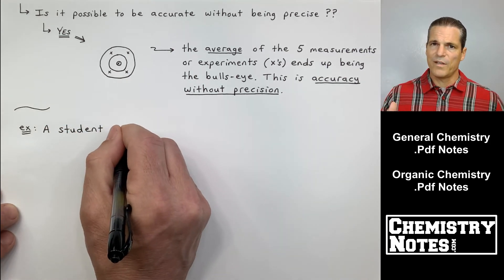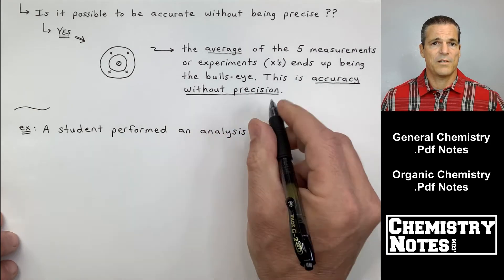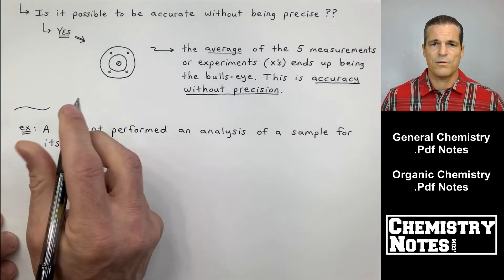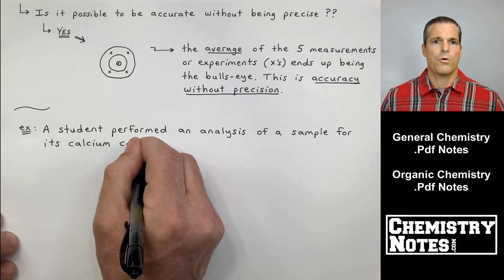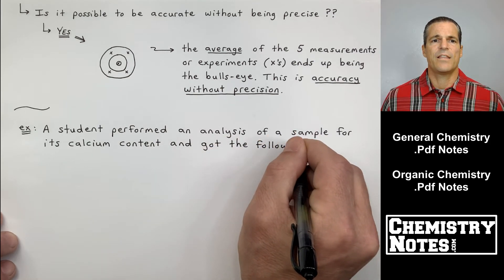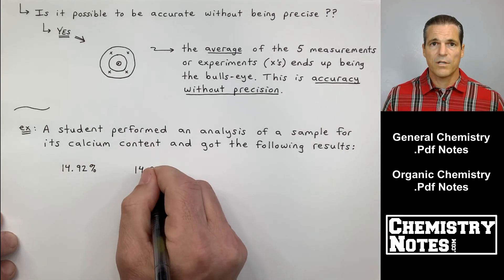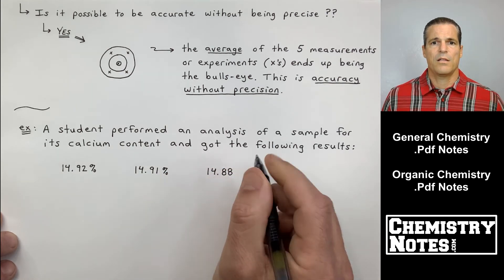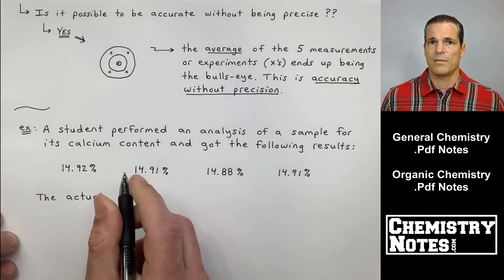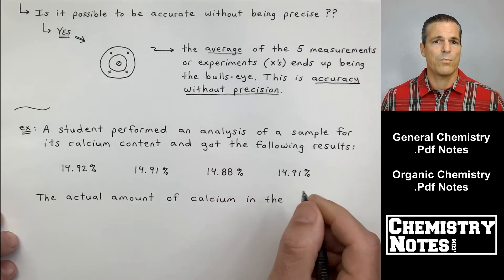All right, that little swervy line means I'm moving to an example. It says a student performed an analysis. So this student could be you, could be the student next to you, but it's a student in a lab performing an analysis of a sample for its calcium content. And this student got the following results. Now there's four results, which means the student has done the experiment four different times. And the results were 14.92% calcium, 14.91% calcium the second time around, third trial 14.88% calcium, and then 14.91% calcium.